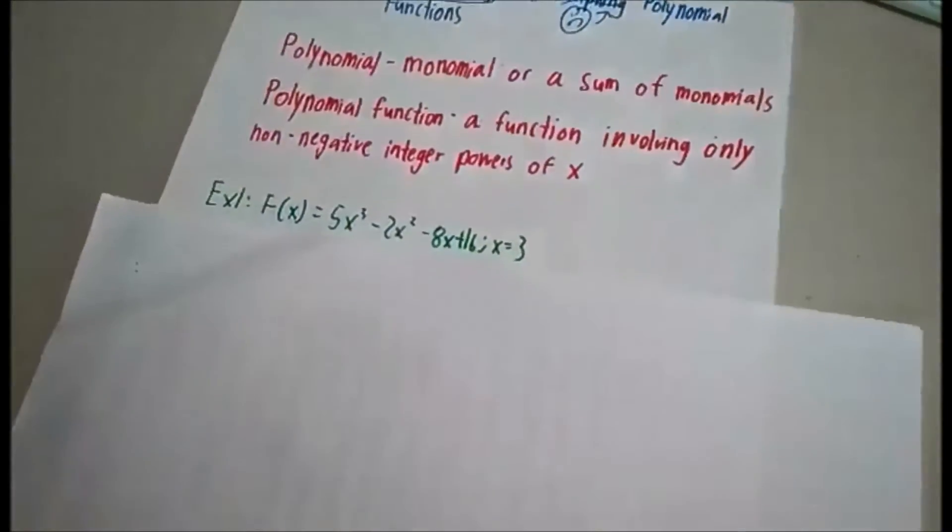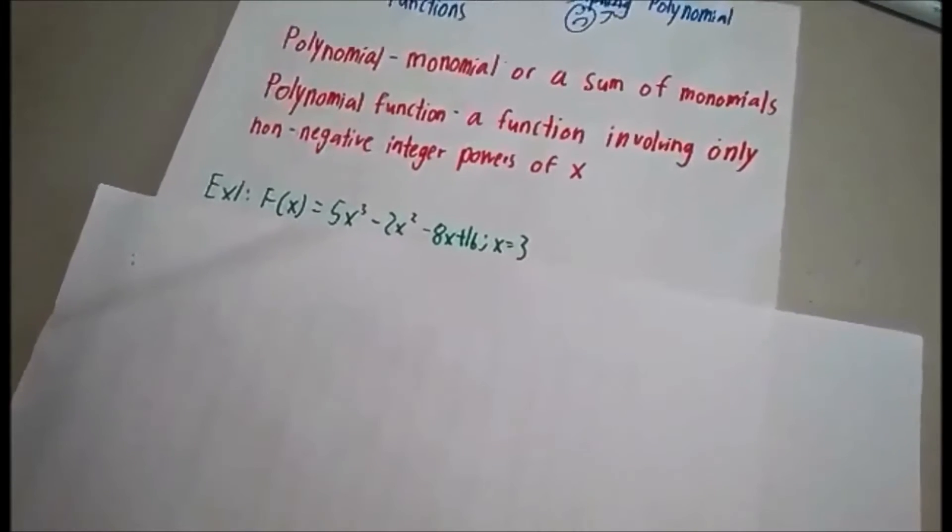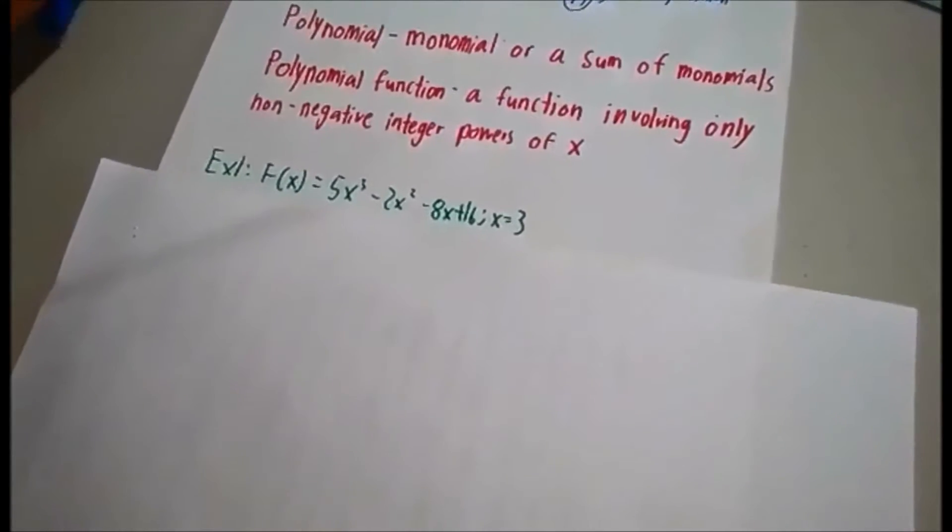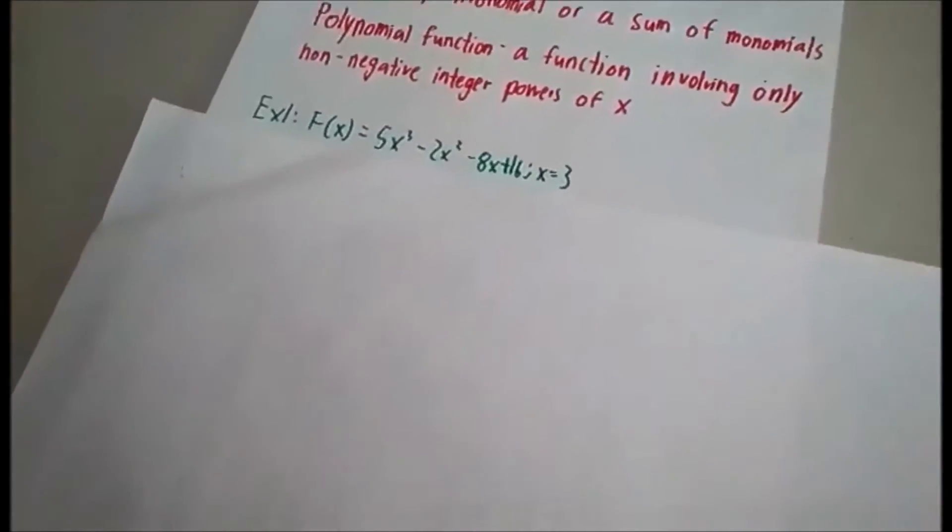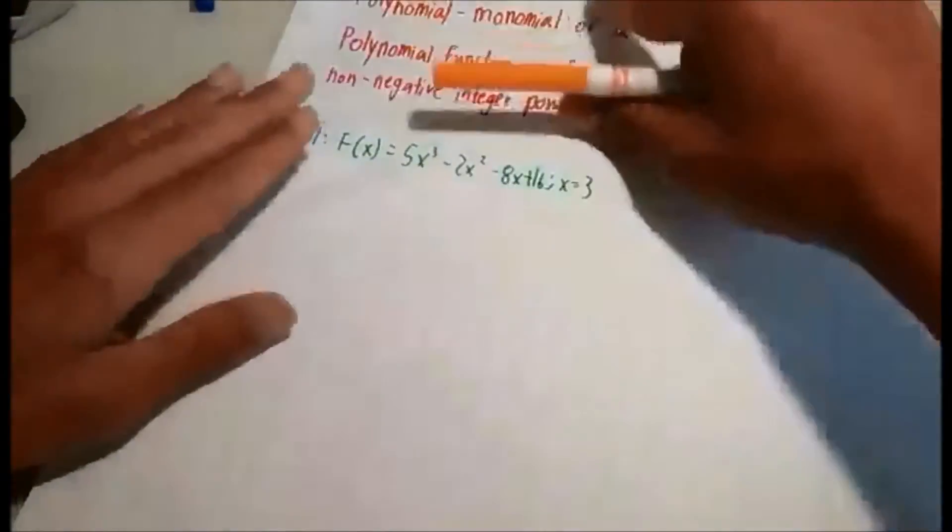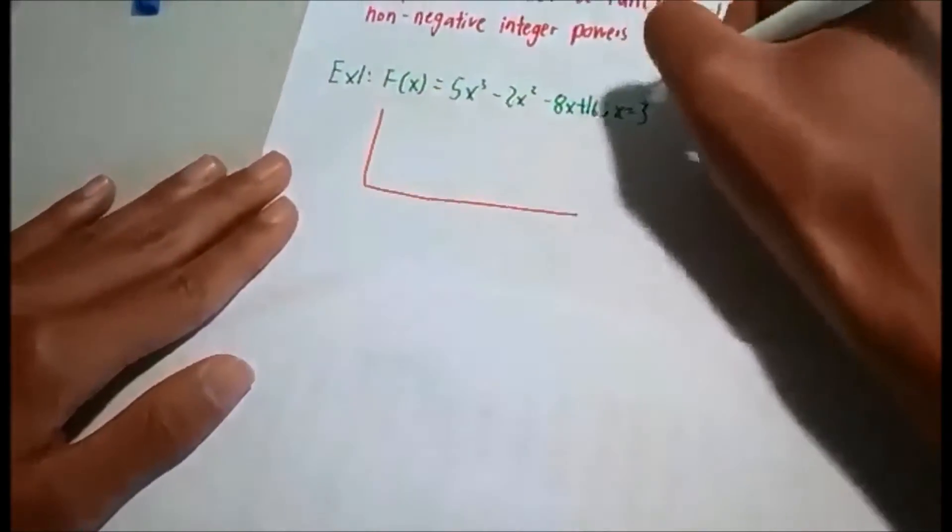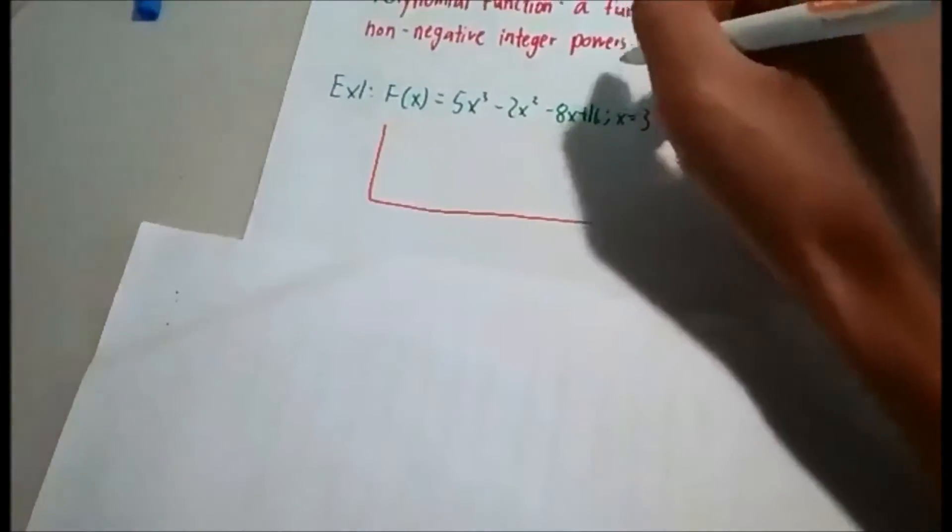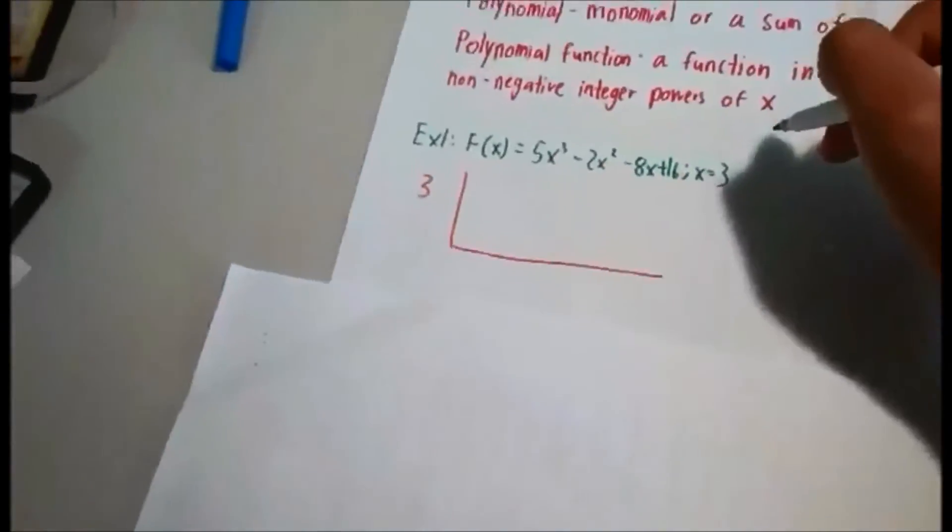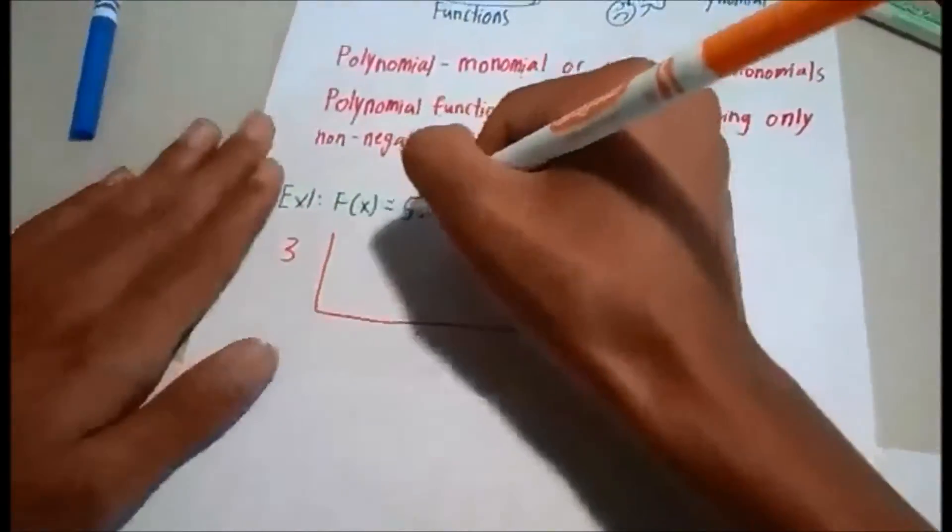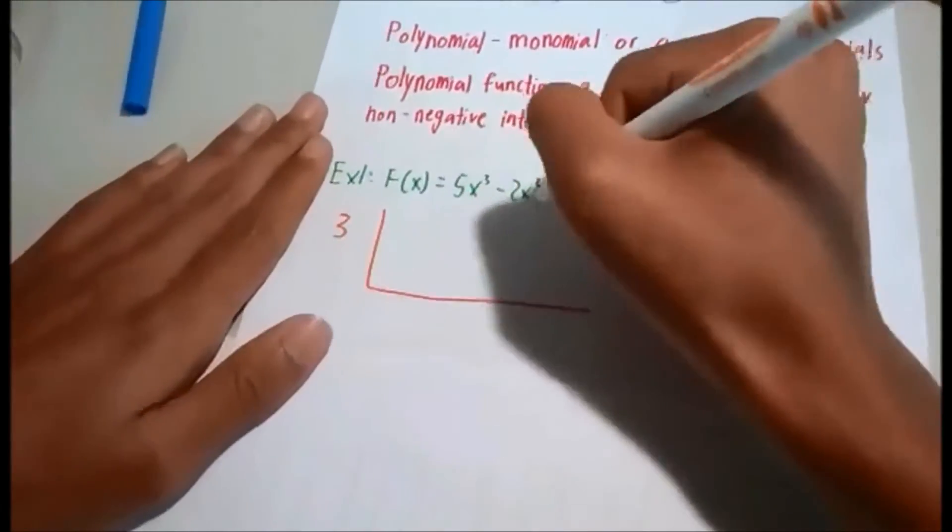The first example is f equals 5x cubed minus 2x squared minus 8x plus 16 and x equals 3. To start off this problem, we will be drawing a long L to format this. Since x equals 3, we will be drawing 3 outside of the L because this is how the problem is done.